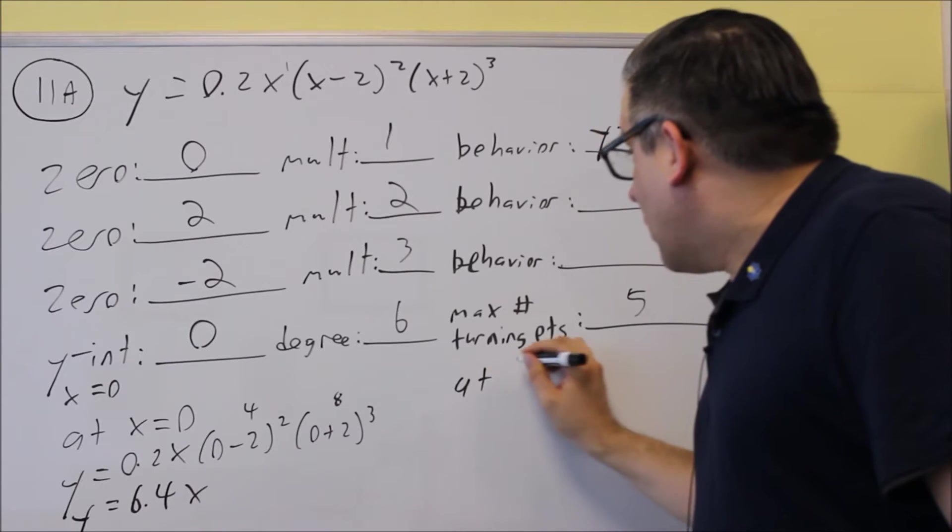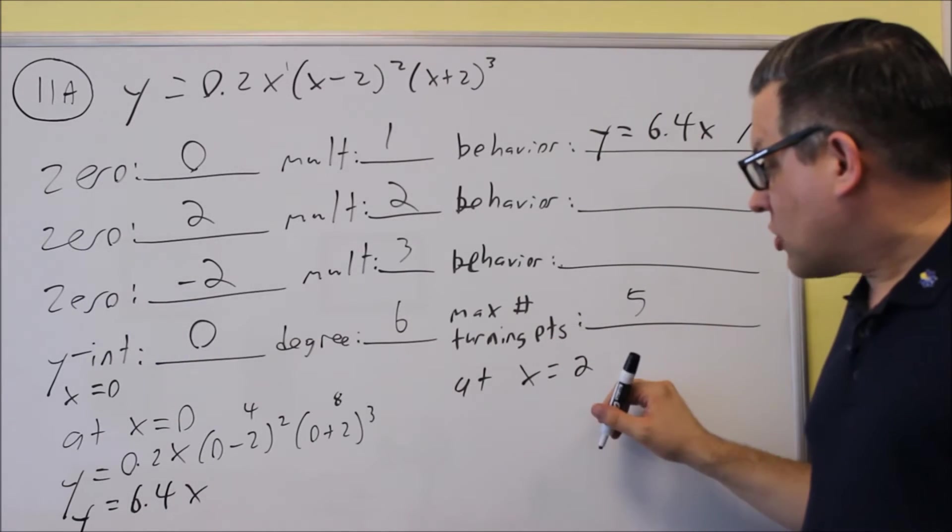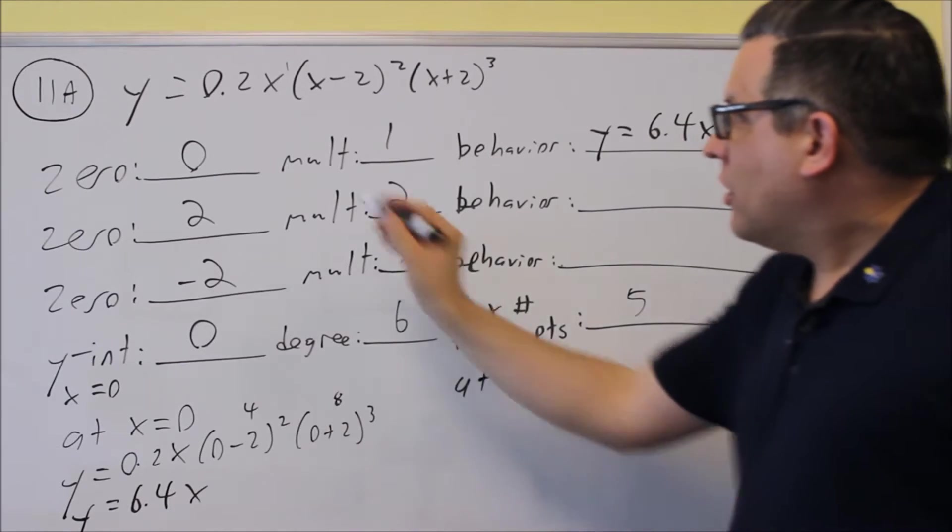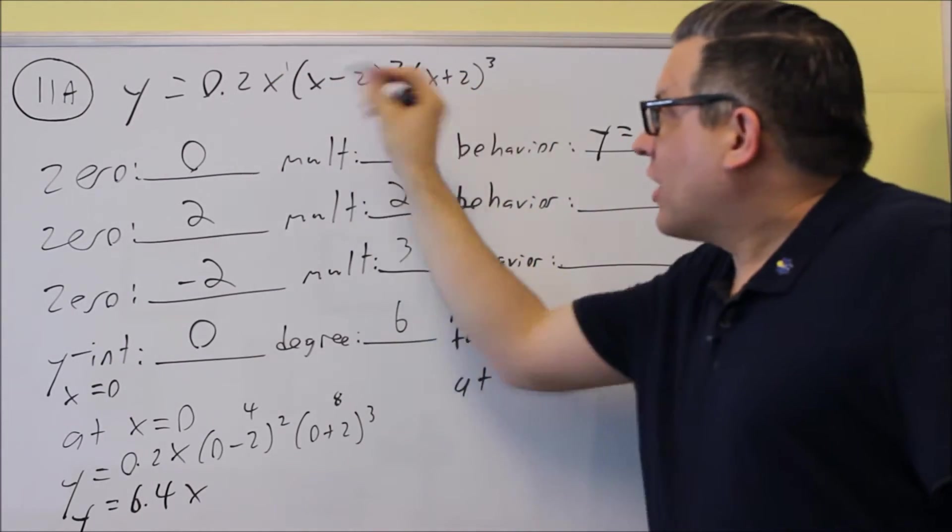Now next, we want to find the behavior at 2. So when we do this one, we're going to put a 2 into the first one and the last one, but not the middle one.